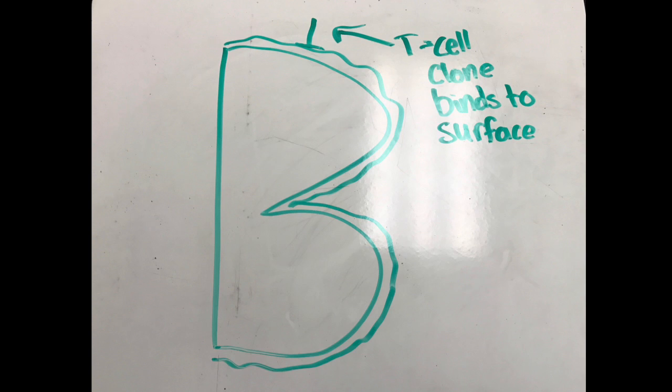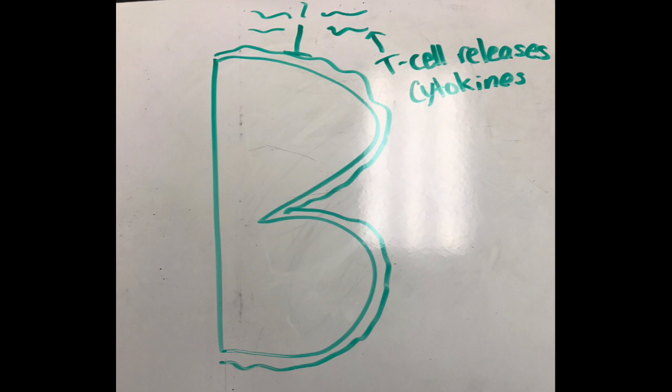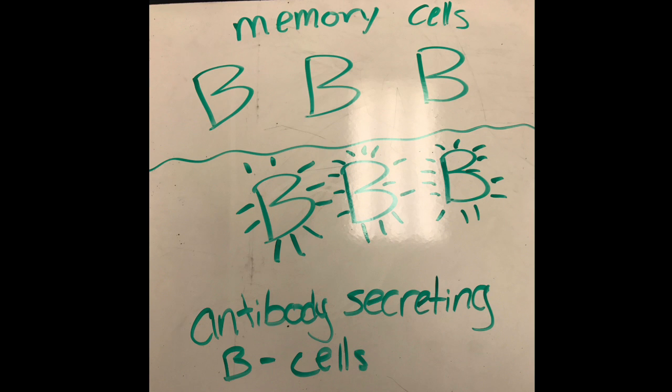A T-cell from the clone of cells now binds to the antigen displayed by the B-cell. Upon binding, the T-cell releases cytokines that stimulate the B-cell to divide and create clones. These clones can either become memory cells or antibody-secreting plasma cells.